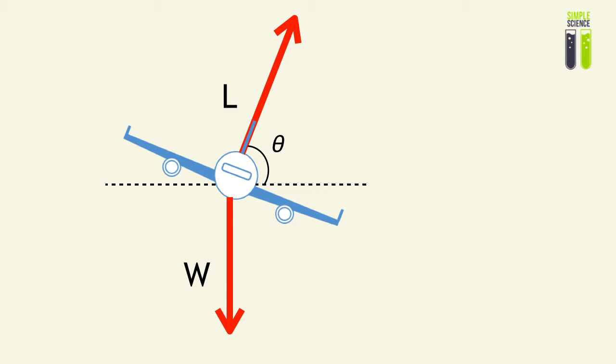And by looking at the lift and the weight forces, we can see that there will be a resultant force acting on the plane. And if the plane is moving in horizontal circular motion, this resultant force must act horizontally.